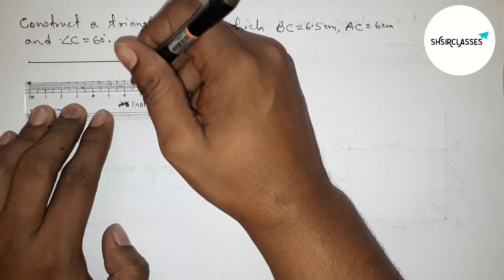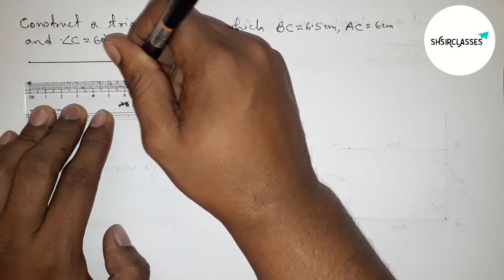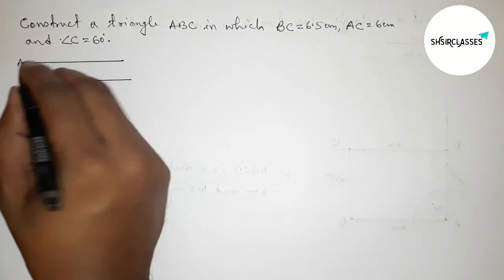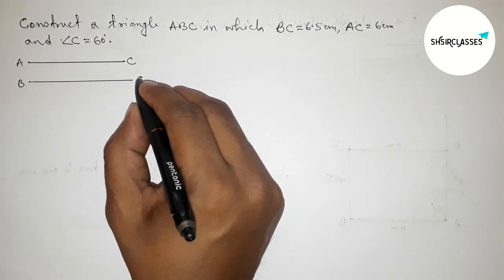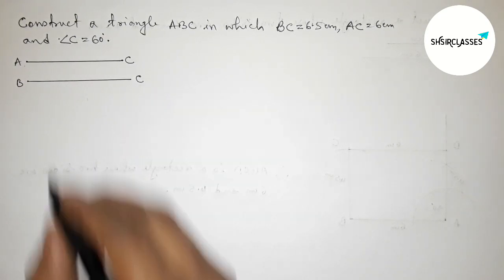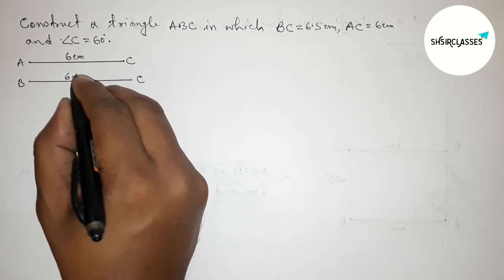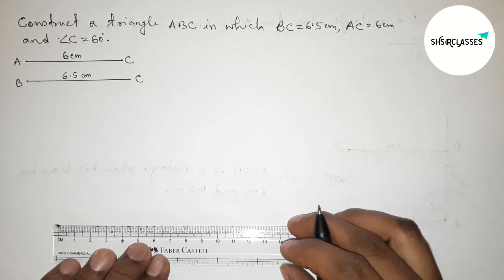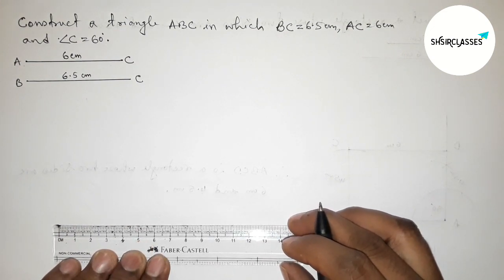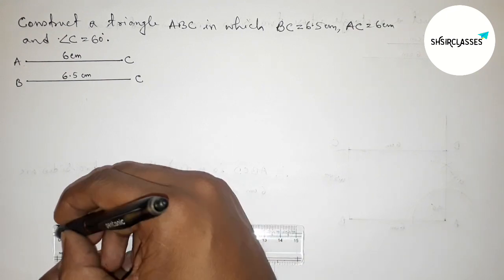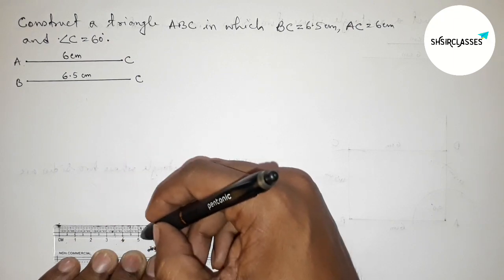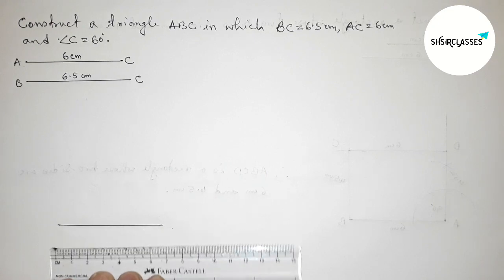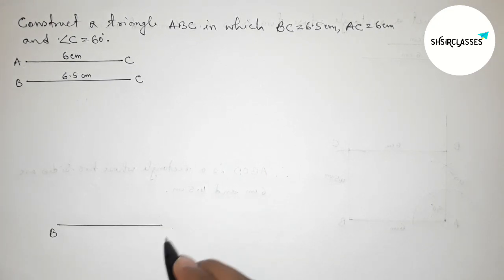So here this one is AC line and this one is BC line segment, this one 6 centimeters and this one 6.5 centimeters. Again we have to draw here the side BC equals 6.5 centimeters, so starting from 0 and this is 6.5 centimeter line. Now taking here point B and here C, so BC equals 6.5 centimeters.